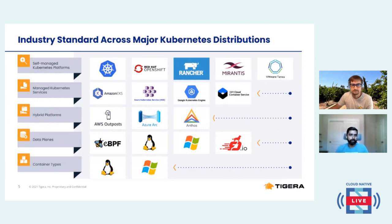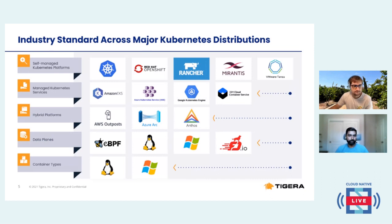Calico works across all major Kubernetes distributions, whether it's OpenShift, Rancher, Mirantis, on-prem, or some of the managed Kubernetes services like Azure, Amazon's EKS, or GKE. It also works on hybrid platforms — we've noticed some folks have used AWS Outposts or even Anthos for their hybrid deployments. And as I mentioned, it works in a pluggable data plane model — we support eBPF, Linux, and Windows, and two types of containers at the moment: Linux and Windows.